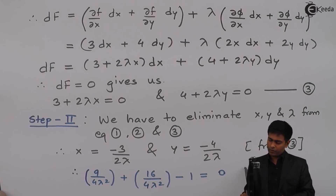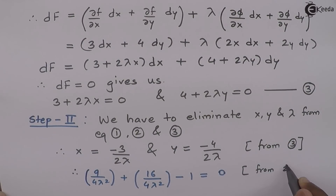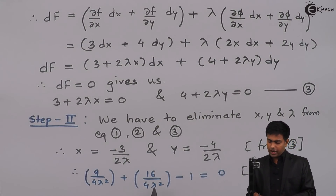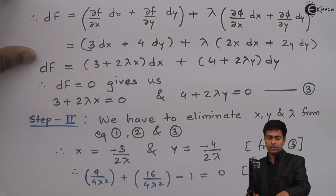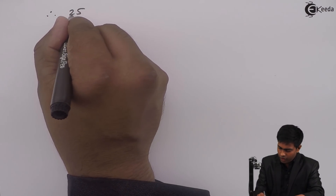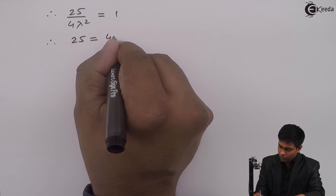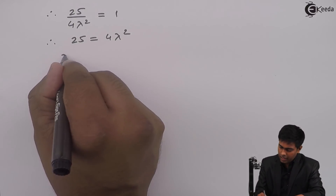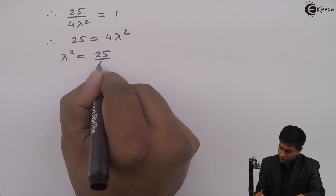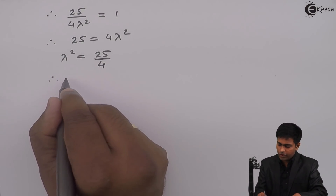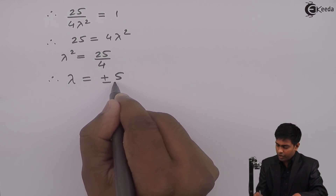Solving this equation, adding the fractions gives 25/(4λ²) = 1, therefore 25 = 4λ², so λ² = 25/4. Taking the square root on both sides, we get λ = ±5/2.